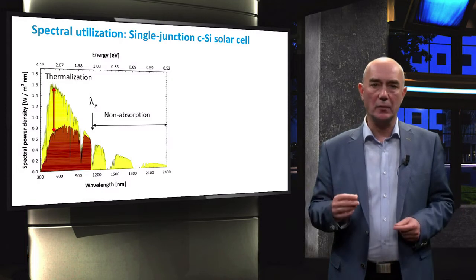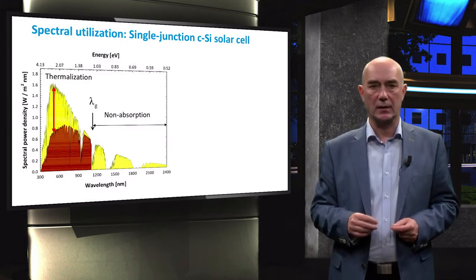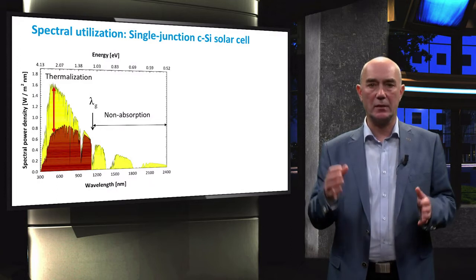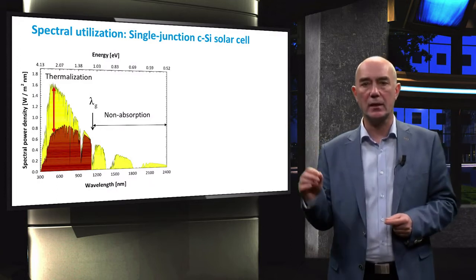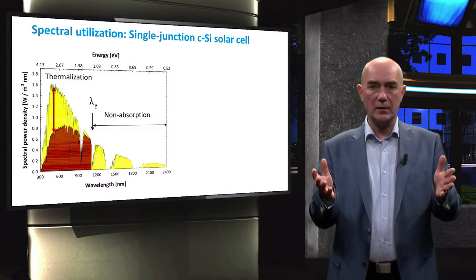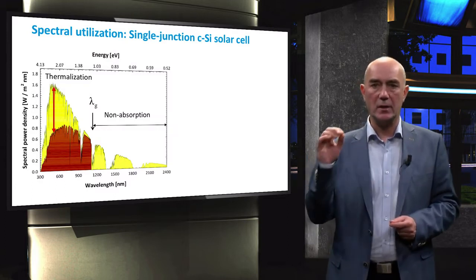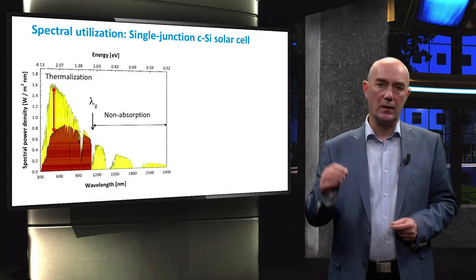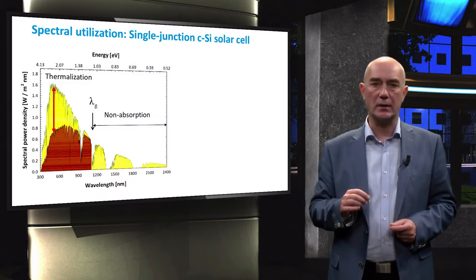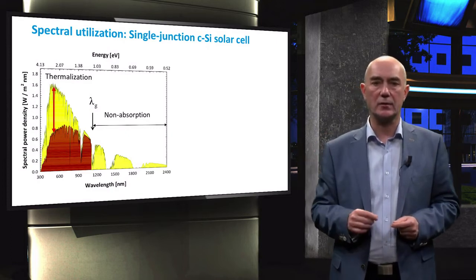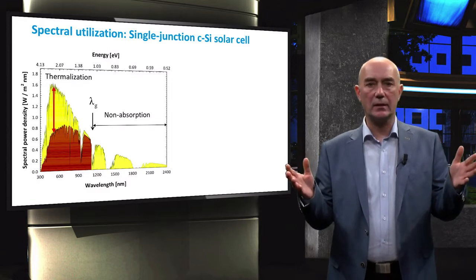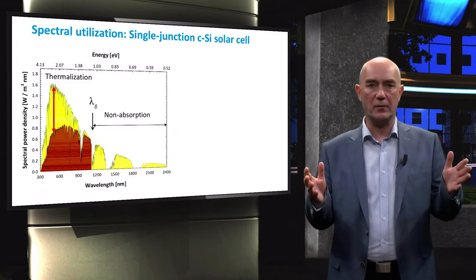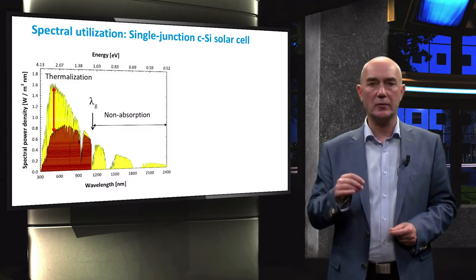Single-junction solar cells can only utilize a fraction of the energy of incident light. This figure illustrates the spectral utilization of the AM1.5 spectrum by a single-junction crystalline silicon solar cell. The spectral irradiance of the AM1.5 spectrum is represented by the yellow area. The brown area shows the fraction of the spectrum whose energy can be converted into electricity by a single-junction crystalline silicon solar cell. The crystalline silicon absorber has a bandgap energy of 1.12 eV, which corresponds to a wavelength of roughly 1,110 nm.